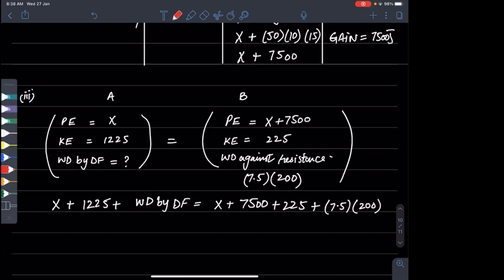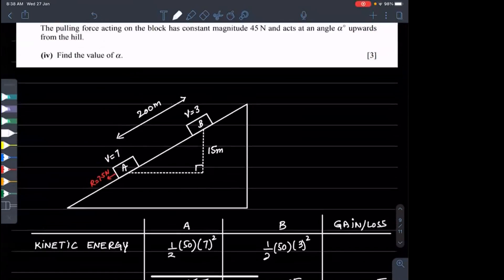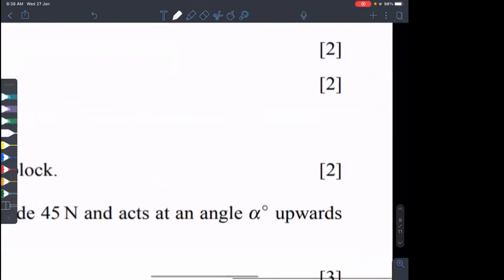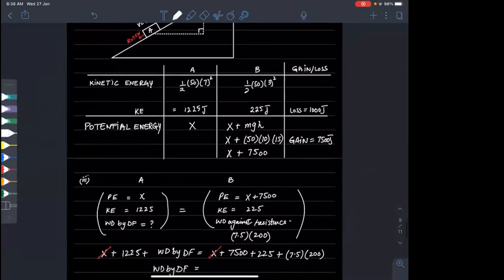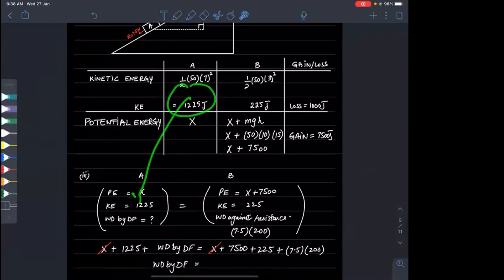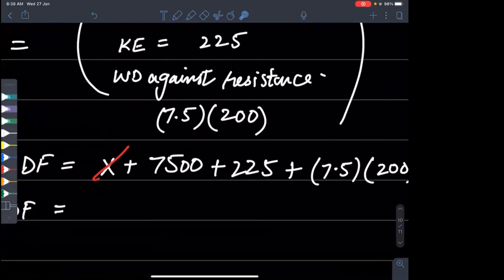X will cancel out and we can isolate work done by driving force. We need to calculate work done against resistance, which is 7.5 times 200.